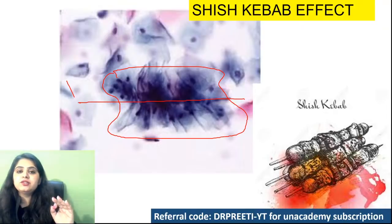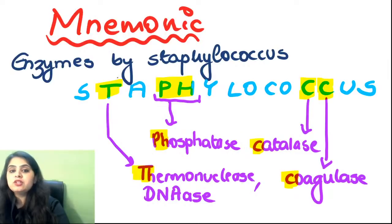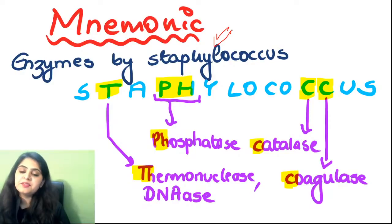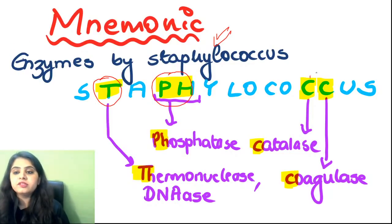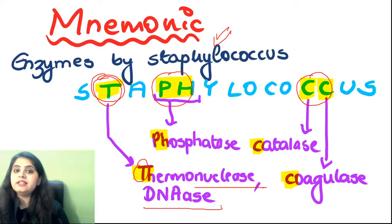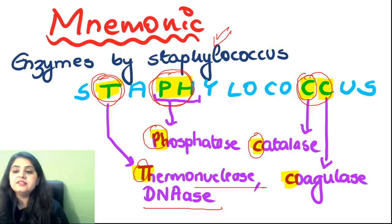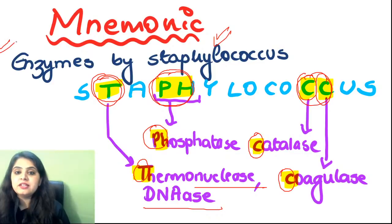Moving on to two mnemonics. Mnemonic one: enzymes released by Staphylococcus aureus — learned from the letters of Staphylococcus. T for thermonuclease and DNase; Ph for phosphatase; C for catalase; and C for coagulase. These are the enzymes released by Staphylococcus.